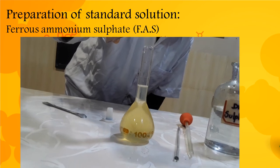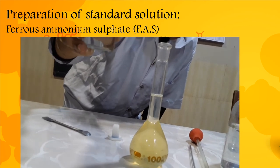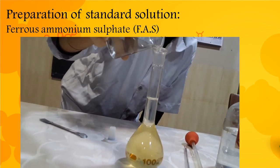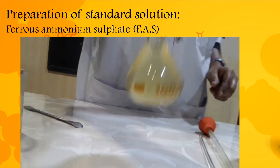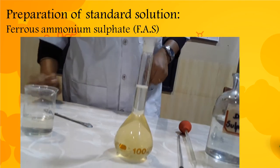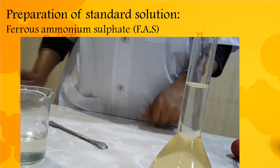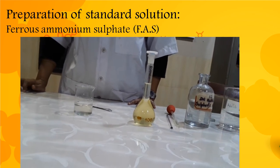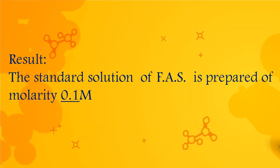Now add water to the mark. This is the lower meniscus we have to observe. This is exactly 100 ml of 0.1 molar ferrous ammonium sulphate solution. The result of the activity is that the standard solution of FAS is prepared with a molarity of 0.1 molar.